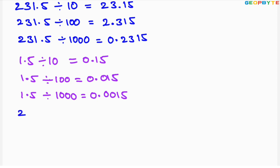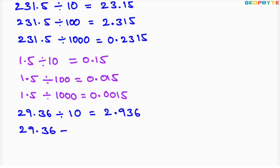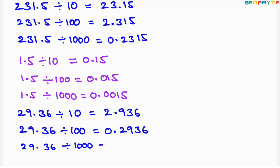Next example: 29.36 divided by 10. Dividing by 10 shifts the decimal point left by one position, giving 2.936. Next, 29.36 divided by 100 — shifting left by two positions gives 0.2936. Next, 29.36 divided by 1000 — shifting left by three positions gives 0.02936.